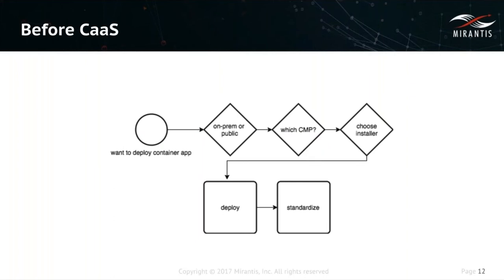Now let's take a look at how this actually works for developers. You're a consumer of Kubernetes — you'd like a cluster to deploy and run your workloads on. Without some kind of containers as a service offering, first you have to decide which cloud to run on — OpenStack or AWS. Then you decide which container management platform you want — we'll assume you've chosen Kubernetes. Then you choose the installer, and there are about 17 different ways to install Kubernetes, a handful of which are really high quality. Then you deploy your cluster, then you standardize it — making sure you've got Prometheus installed for monitoring, deploying a log collection framework, installing Helm for your application catalog. There's a lot to consider, and we want to wipe away all of this complexity.